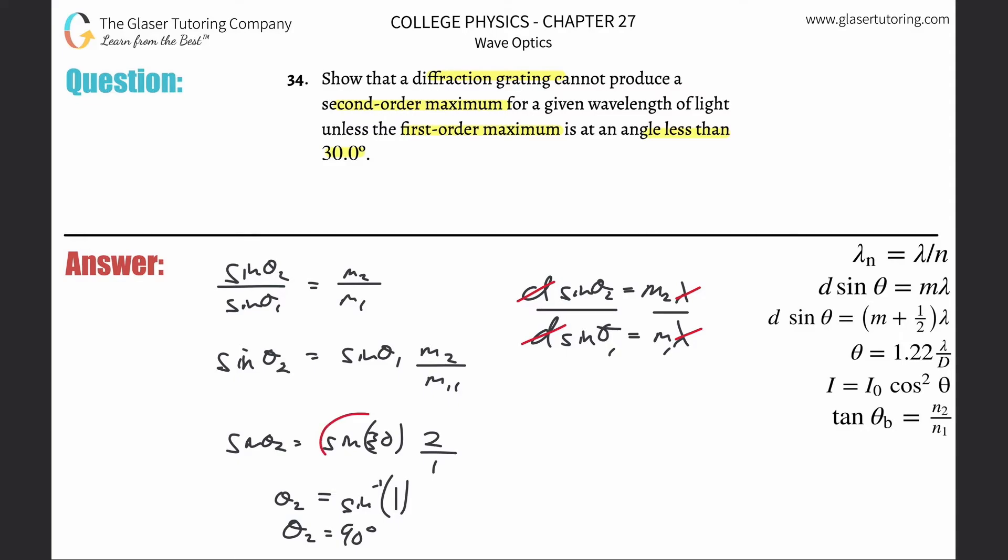Now, what's the value of sine of 31? Plug that into your calculator. Sine of 31. That's like 0.515. Multiply it by 2. So now this works out to be about 1.03.